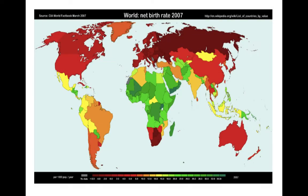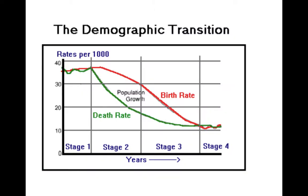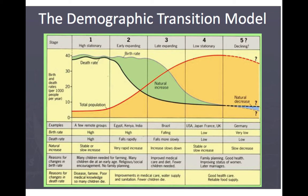Here's a net birth rate map from 2007 showing where the most people are born — green is high, red is low. This chart illustrates the stages of demographic transition. When both your death rate and birth rate are high, your population is stable. When your birth rate is high but your death rate is low, you have population growth. You can see a stationary stage where birth and death rates are both high but stable, and an expanding stage where the birth rate produces population growth.